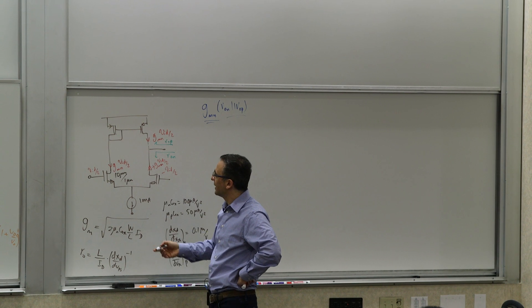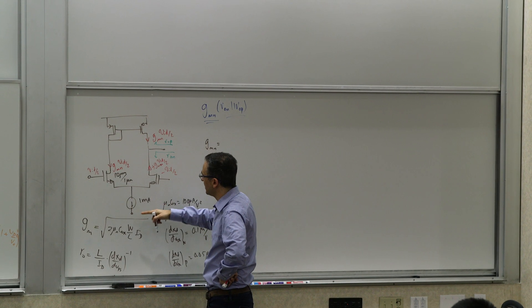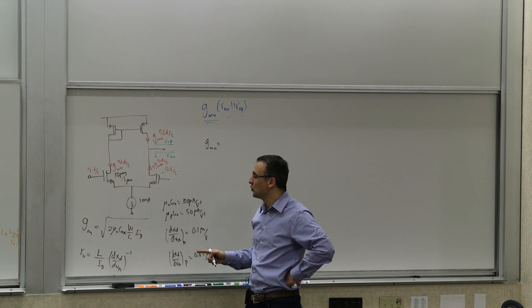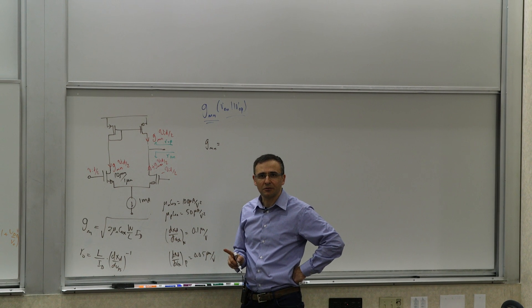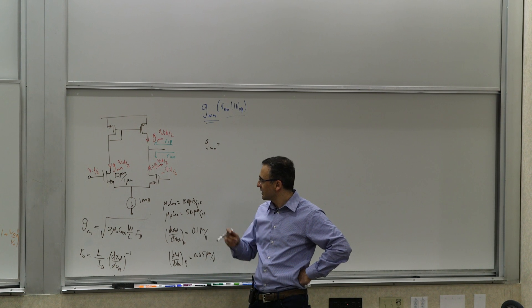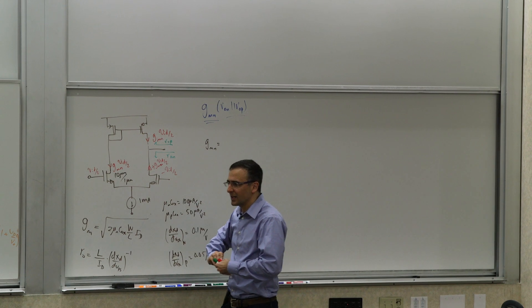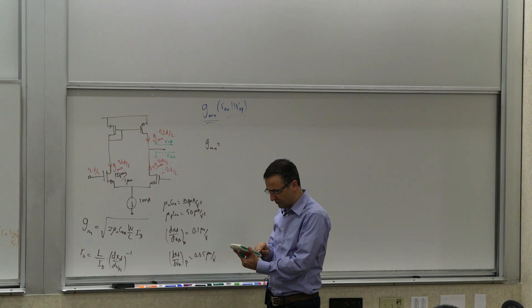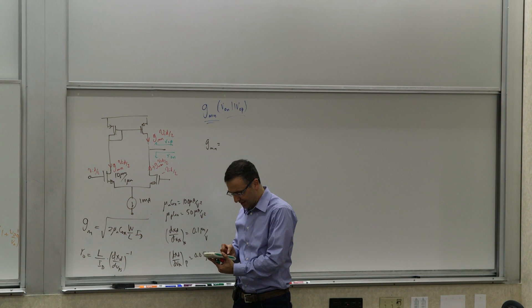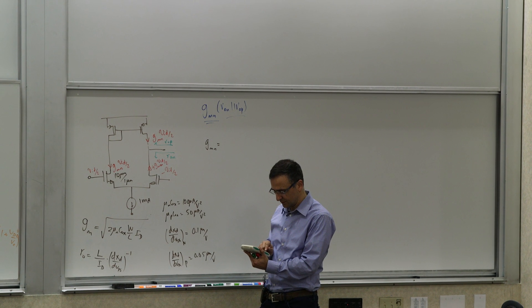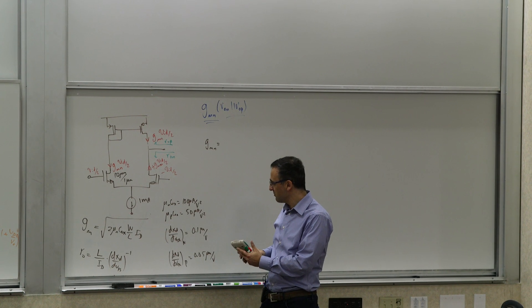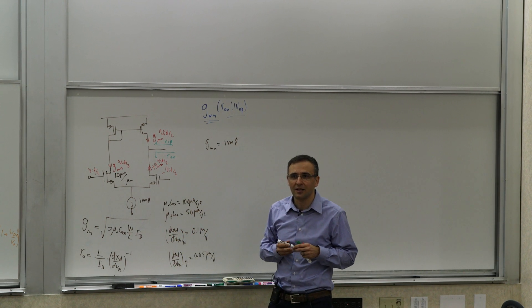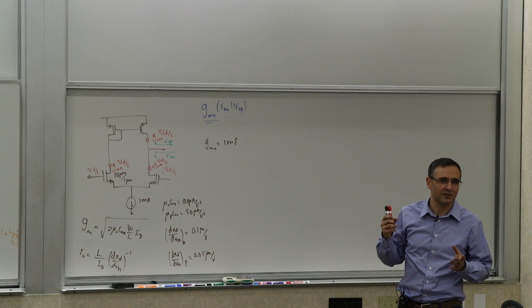What is GM? GM, in terms of if your current is fixed, it's going to be two mu N or mu P Cox, W over L ID. And RO is basically L over ID times dXD dVDS or one over dXD dVDS inverse. So these are the things that will affect me. Now, we want to get high output resistance at least for the PFETs. So that means that I actually want a relatively large L if I could get it. So let's give some numbers. Let me just say mu N Cox, let's say of 100 microamps per volt squared, mu P Cox, these are like 50 microamps per volt squared.